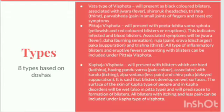In Pitta jaha type of Vispota, there will be pitta lohita varna of spota, indicating infected and blood blisters associated with symptoms of jwara, dah, ruja, srava, paka, and trishna. All types of inflammatory blisters and eruptive fevers presenting with blisters can be included in Pitta jaha Vispota. In Kapha jaha type, the blisters are hard in nature (ghattina), have pandu varna, and are associated with kandu and alpavedana, acting as chirapaki with delayed separation.